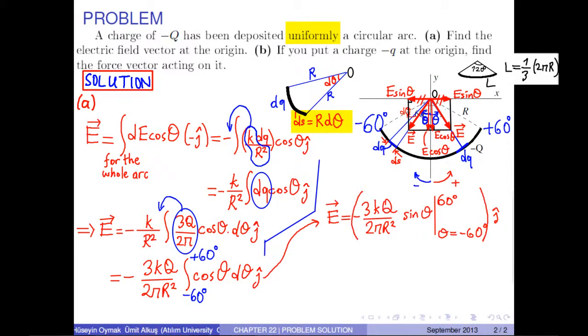Therefore, we have negative 3kq over 2 pi r squared times sinθ evaluated from negative 60 degrees to positive 60 degrees, j hat. Therefore, we have negative 3kq over 2 pi r squared times sin 60 degrees minus sin negative 60 degrees, j hat.